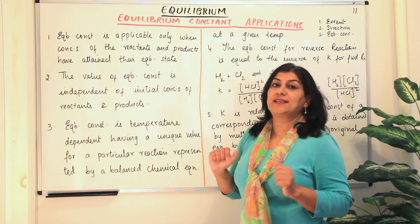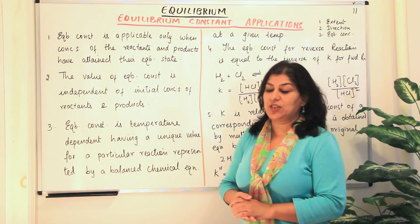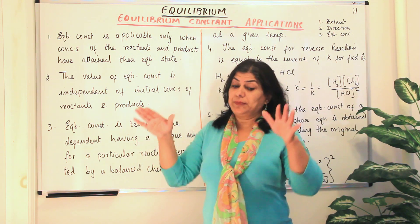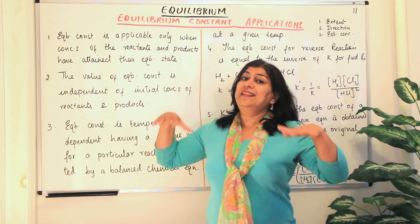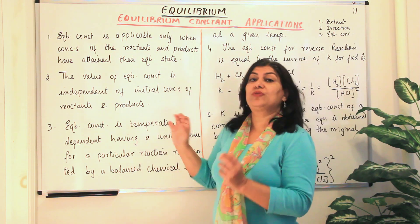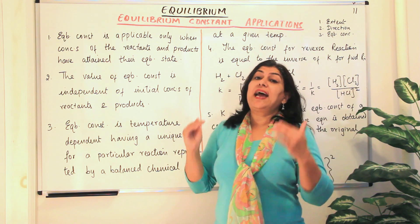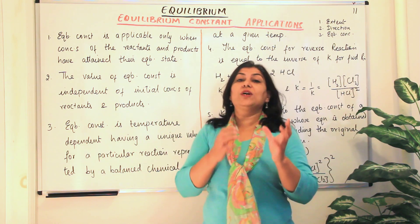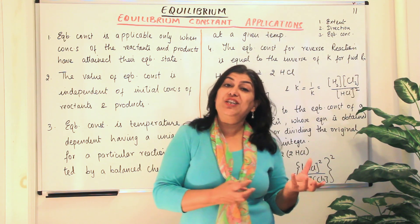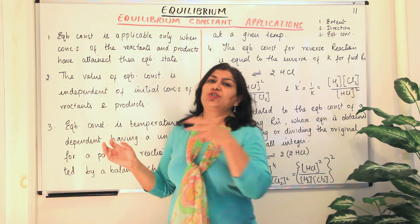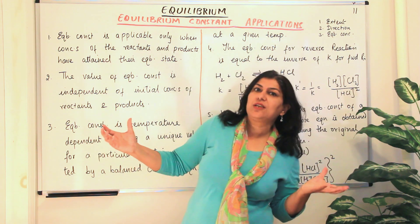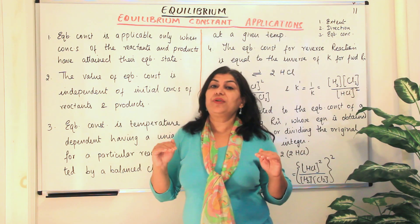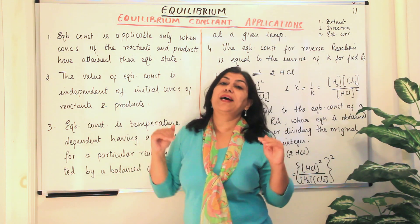The second point about equilibrium constant is that its value is independent of the initial concentrations of reactants and products. You may start with a large quantity of reactants — whatever the initial concentration, the equilibrium constant only uses the values of concentrations at the equilibrium state. So it doesn't matter whether you started with the reactants or the products, or whether the concentration of the reactants was zero initially. What only matters is the concentration of reactants and products when equilibrium has been established.